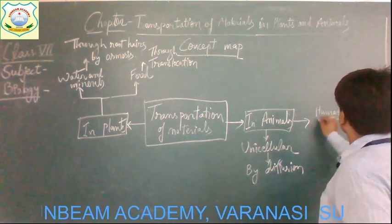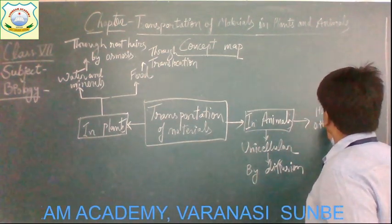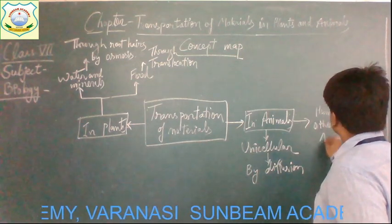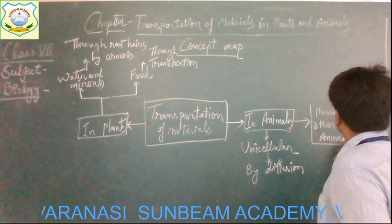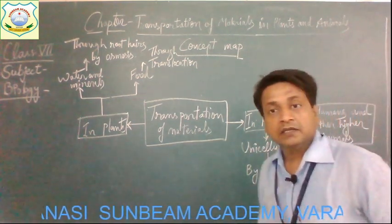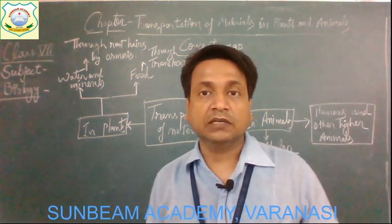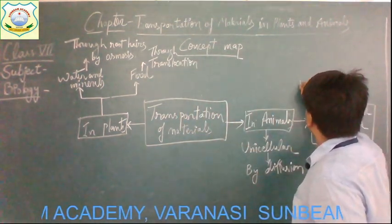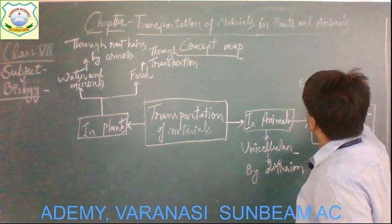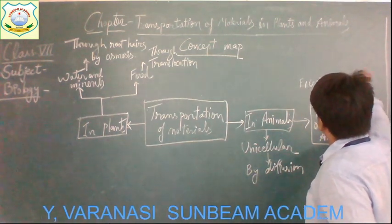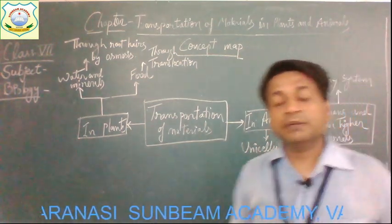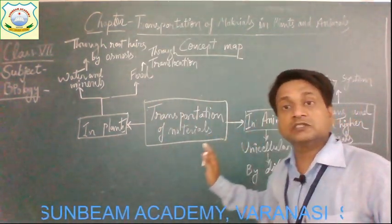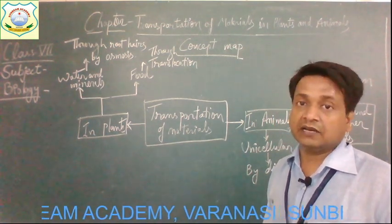In higher animals like humans, they have two different systems in the body for the transportation of substances. The first system is the excretory system, which is responsible for the removal of waste material from the body.